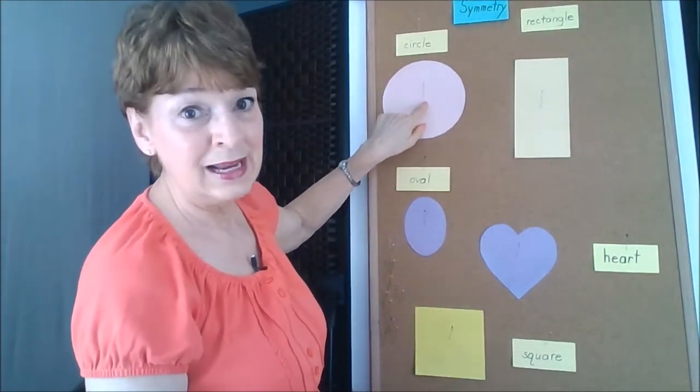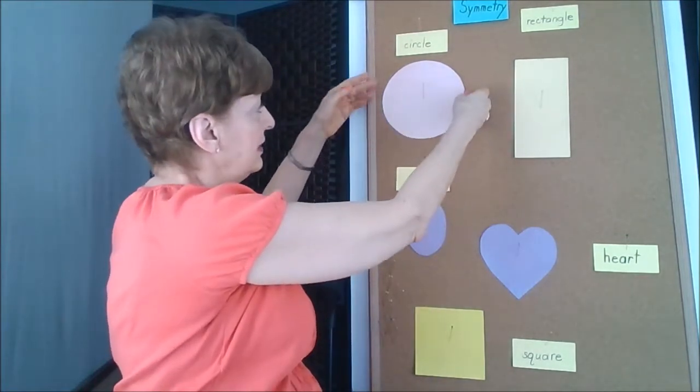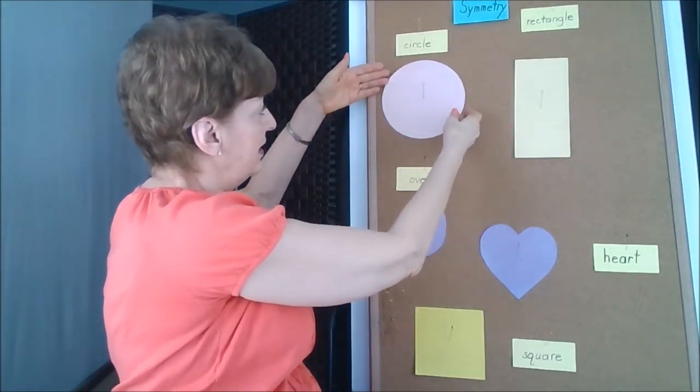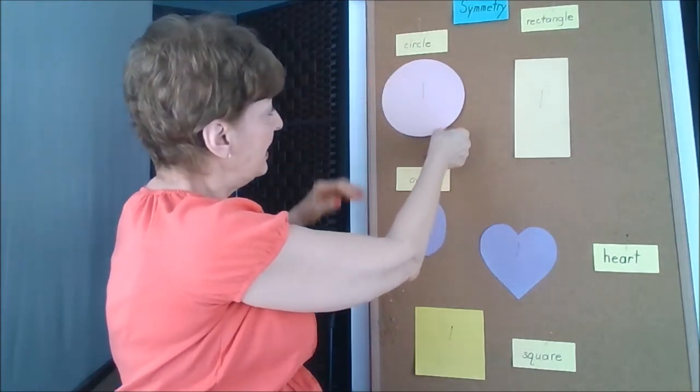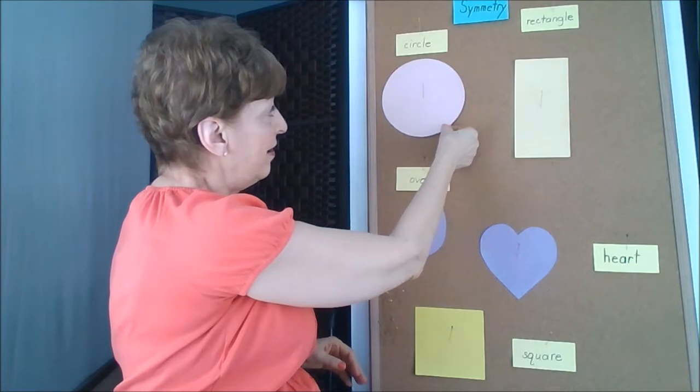If I were to take my circle and turn it, see how I'm turning it around and around? It still looks like a circle no matter where I have it.